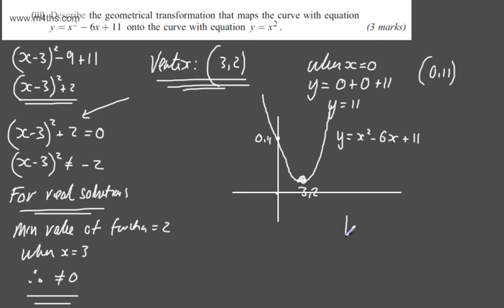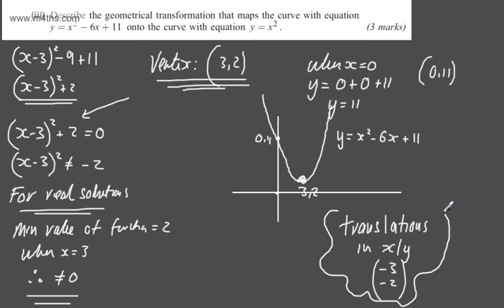We're going to do exactly the same. We state in a sentence that these will be translations in both the x and y direction. The translation as a vector is going to be (-3, -2). We're asked to write this out. I'll let you write the sentence.